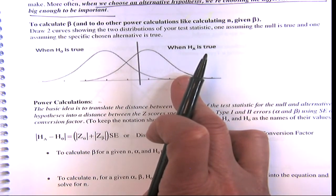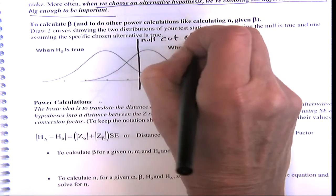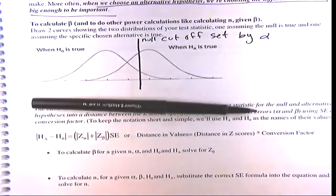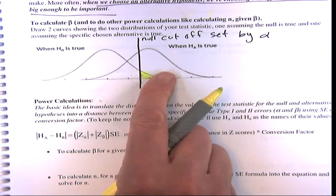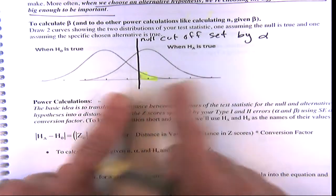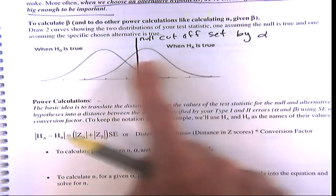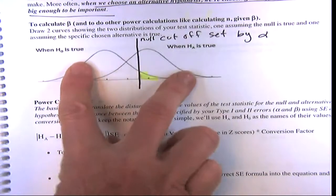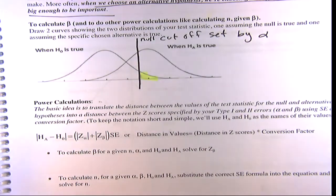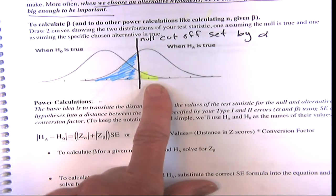When the null is true you have a sampling distribution under the null, and then one under the alternative. You set a null cutoff at the significance level alpha — that sets the area corresponding to the probability of wrongly deciding for the alternative when the null is true. When the alternative is true, you have another probability distribution, and that same null cutoff creates the Type 2 error region.